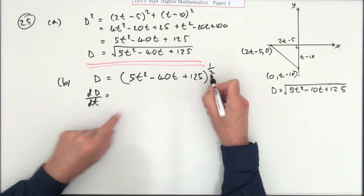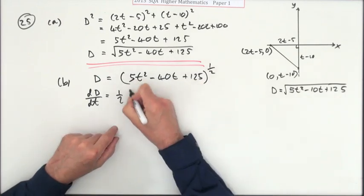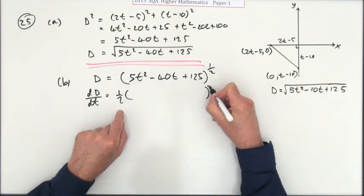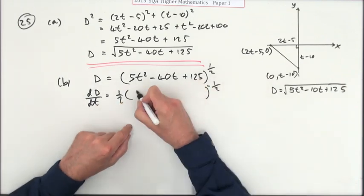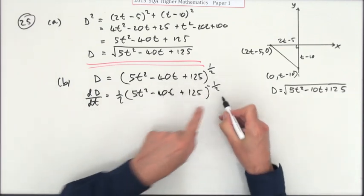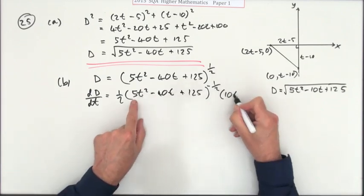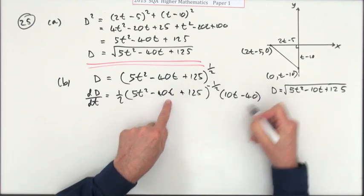It's a function of a function, so outside first: a half of, multiply the power down, what's inside it. It's not that wee, that's a quadratic. So multiply your answer by the derivative of this which will be 10t minus 40.